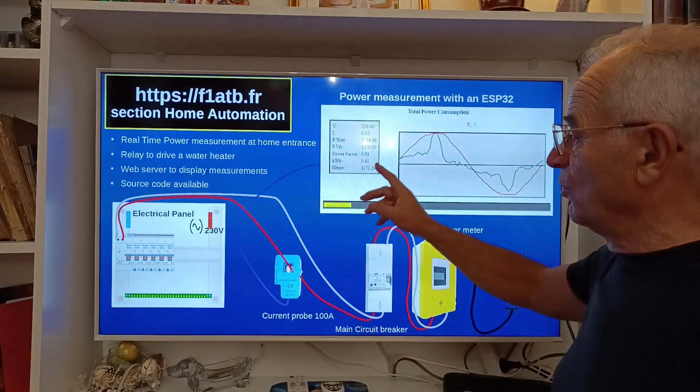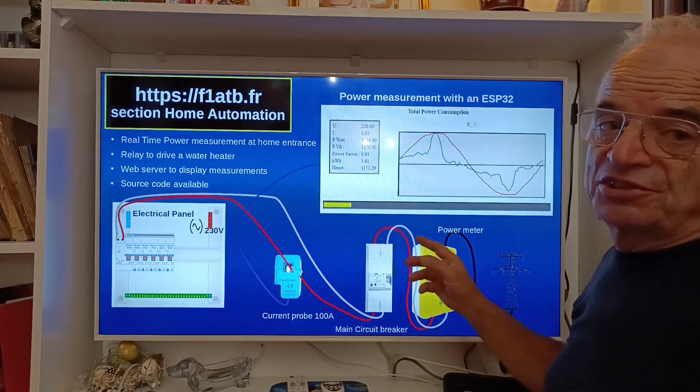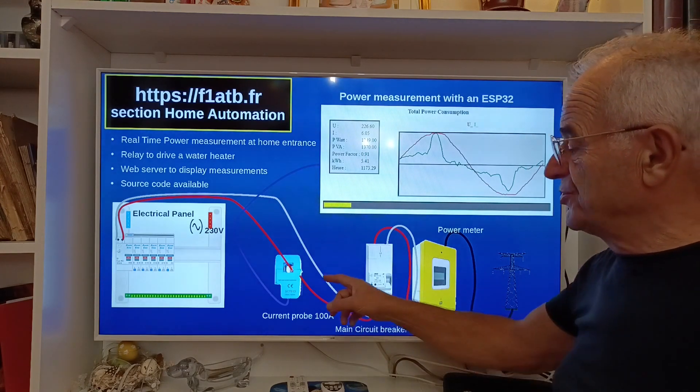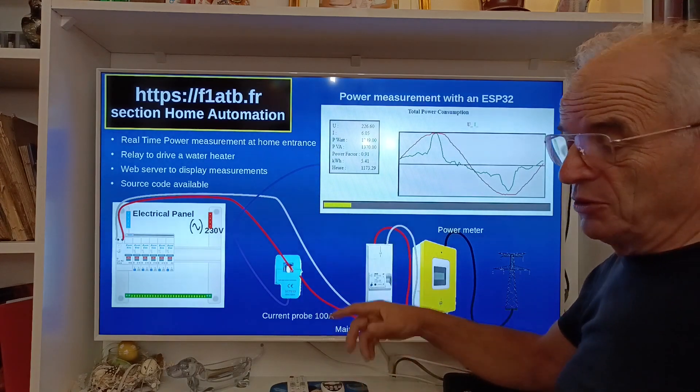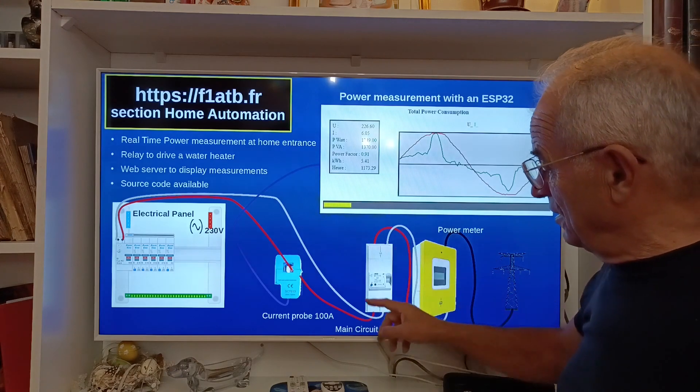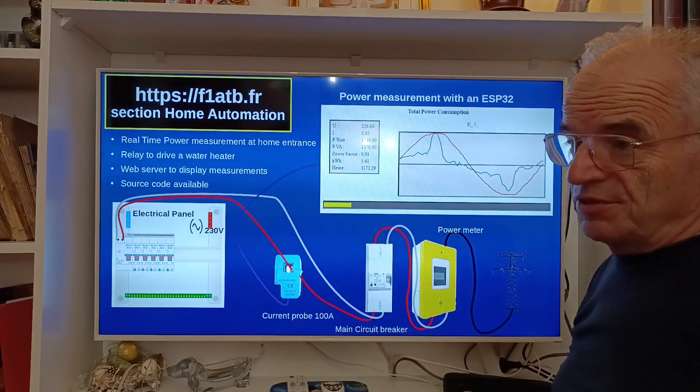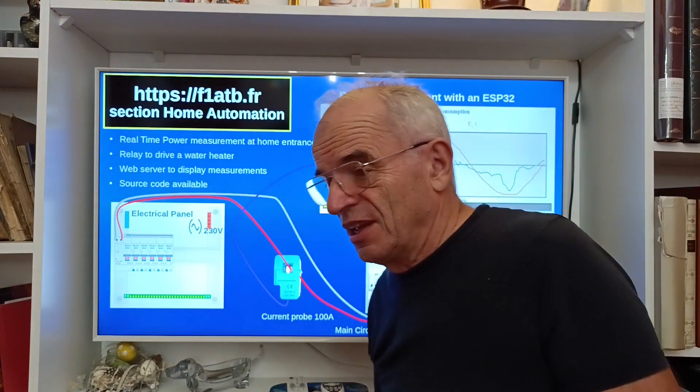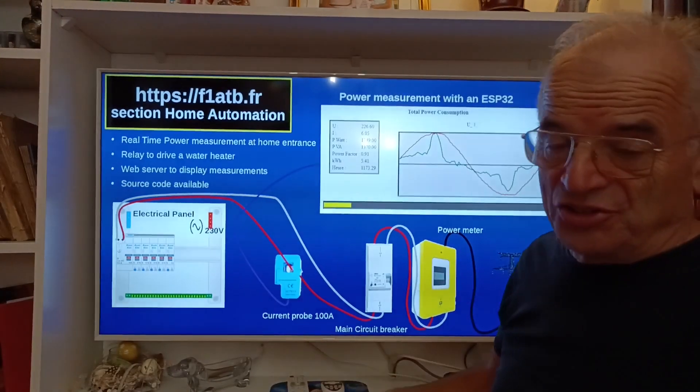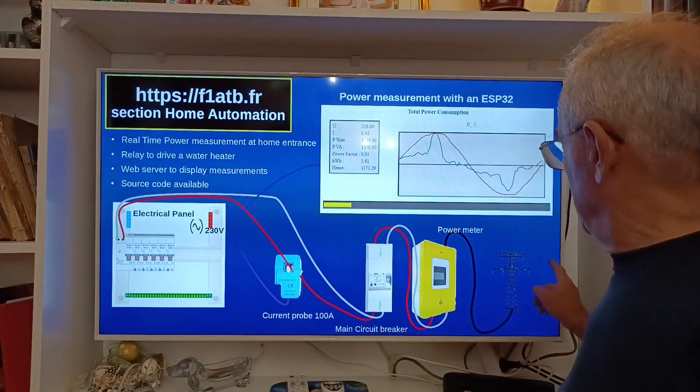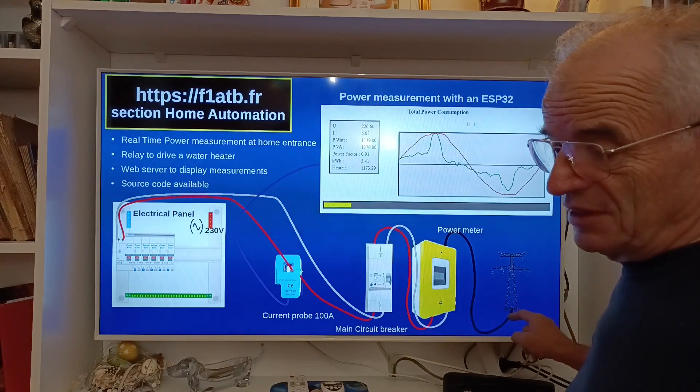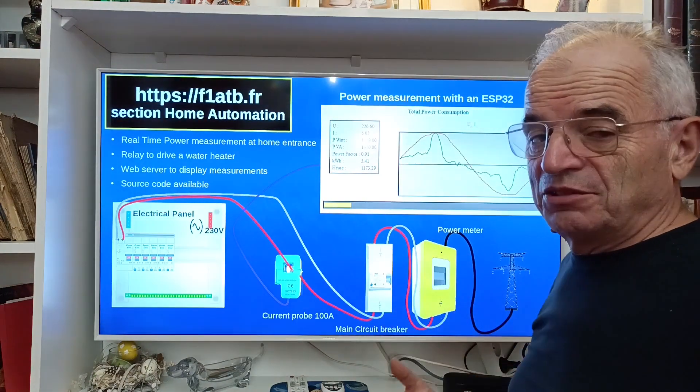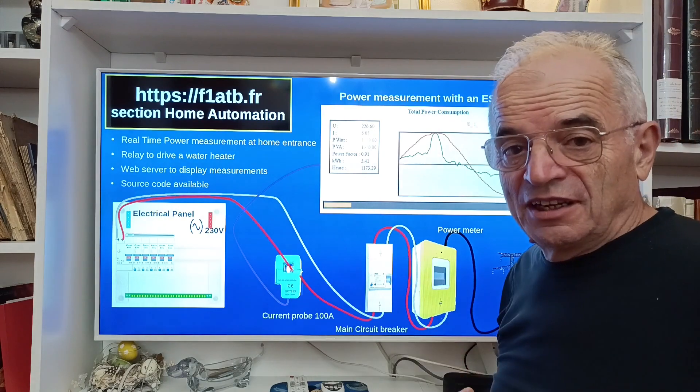And you will also have a description and video of a system which will measure the output and input of power at the entrance of your house. Because the risk you have, if you have a lot of sun, is to produce too much energy. And the excess of energy will go freely to the grid, to the outside world. And it's better in your case to detect this situation and try to consume internally this energy, for example by injecting the energy inside your boiling water.